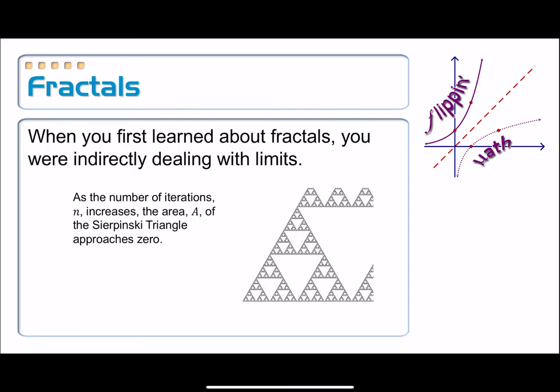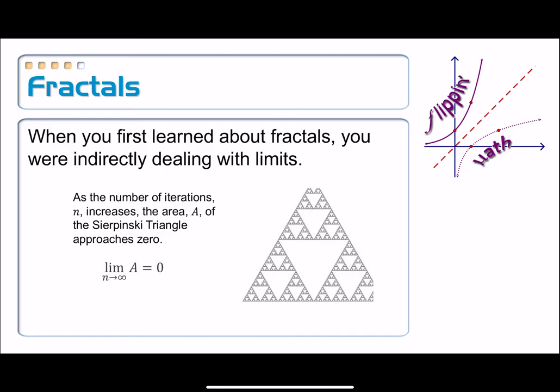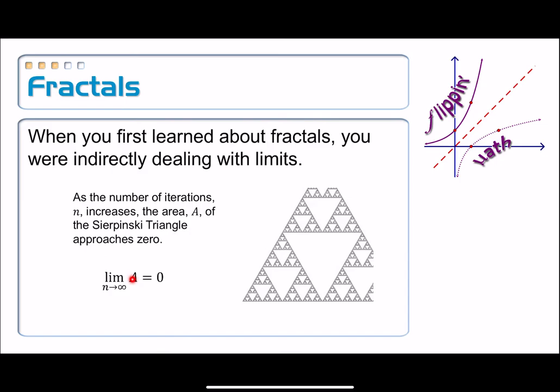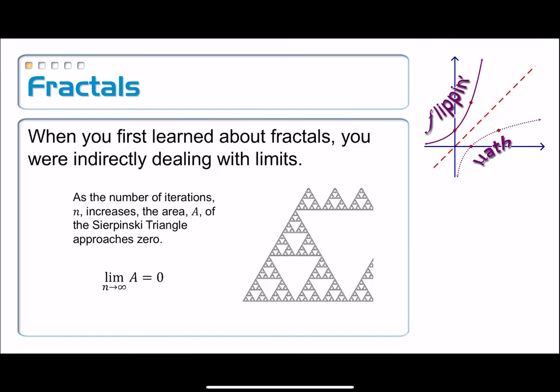The area of this Sierpinski triangle is approaching zero as the number of iterations increases. So, here's another limit notation for you. The limit of the area of that Sierpinski triangle is going to equal zero as n approaches infinity. Does it ever equal zero? No. It's just going to get closer and closer to it.